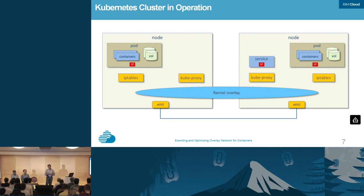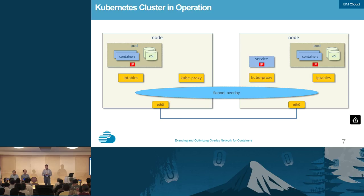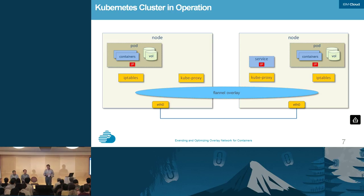Taking the OpenStack structure and the Kubernetes structure together, here you have two nodes connected on a private network with ETH0, a Flannel overlay, and the components to support kubeproxy and the IP tables. There are two pods shown, one on each host, and within each pod is a set of containers. The pods have IPs, and the pod on the right side has a service associated with it. A container from the pod on the left would talk to a container in the pod on the right by going through that service. That's how the Kubernetes cluster operates.